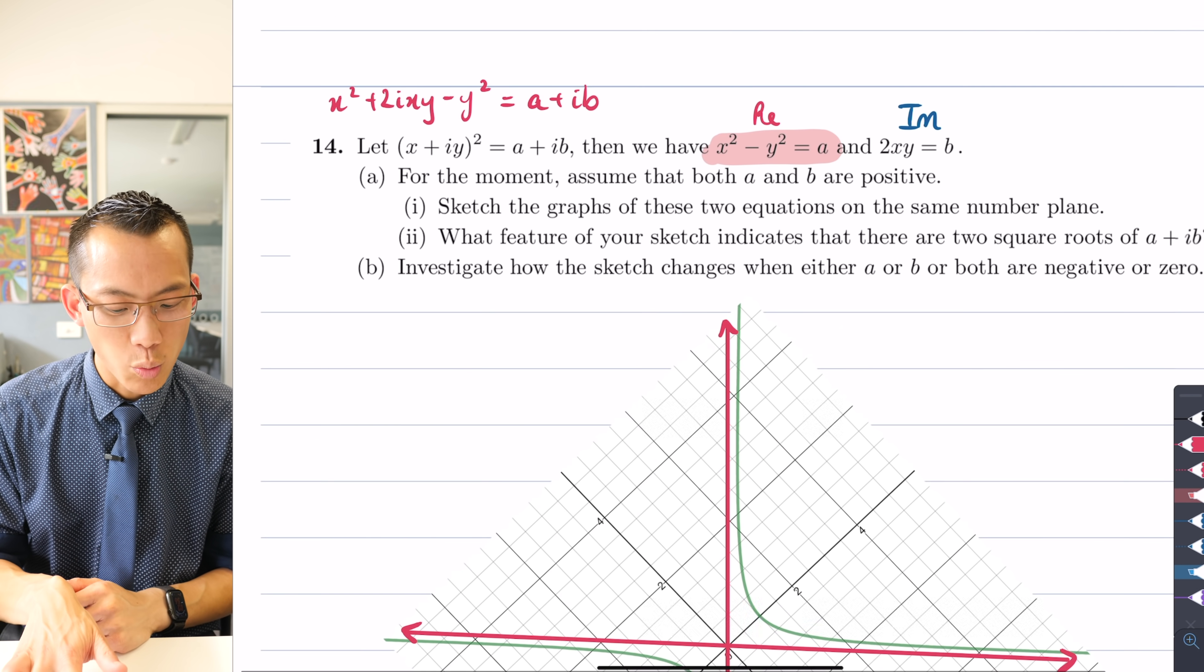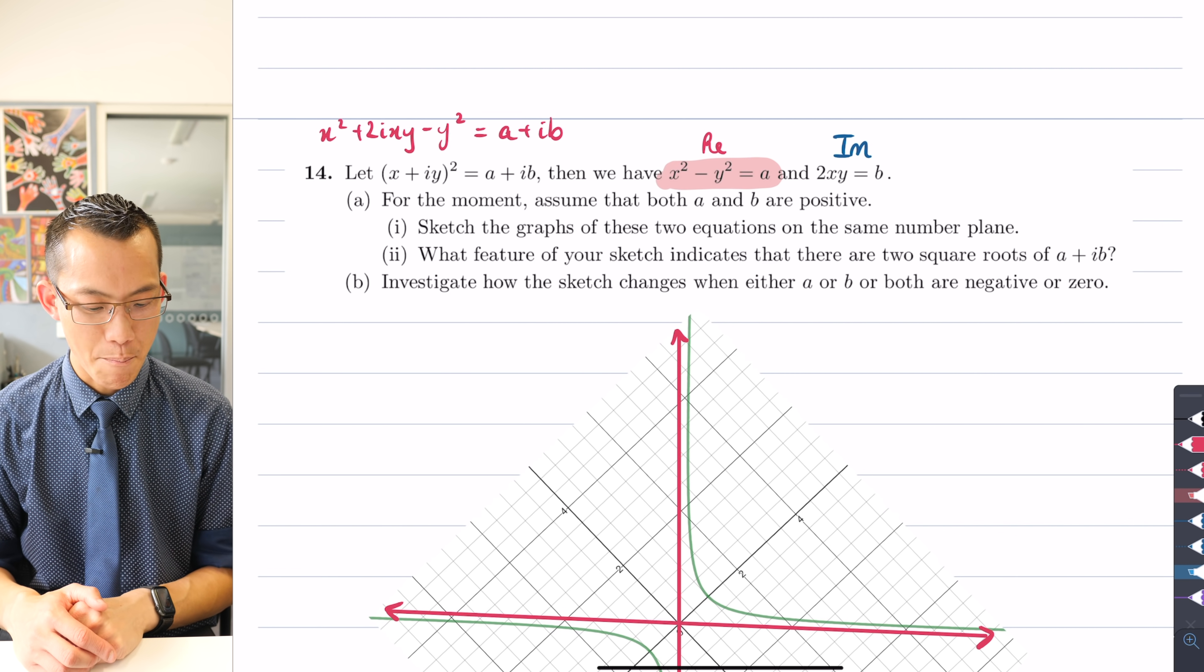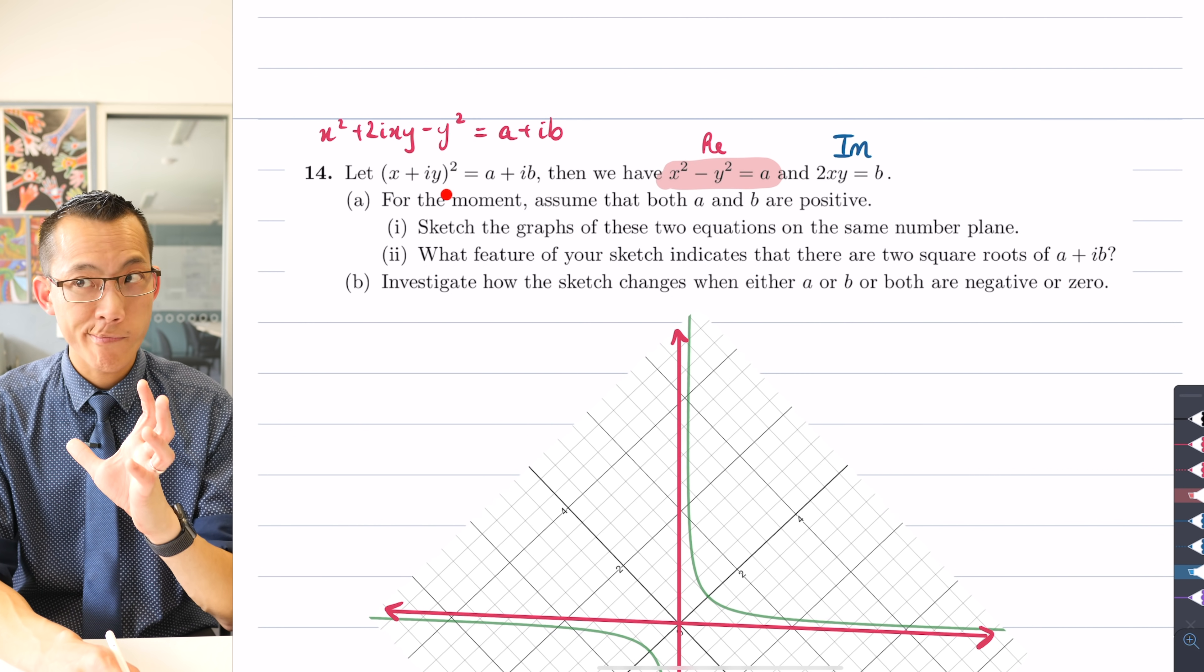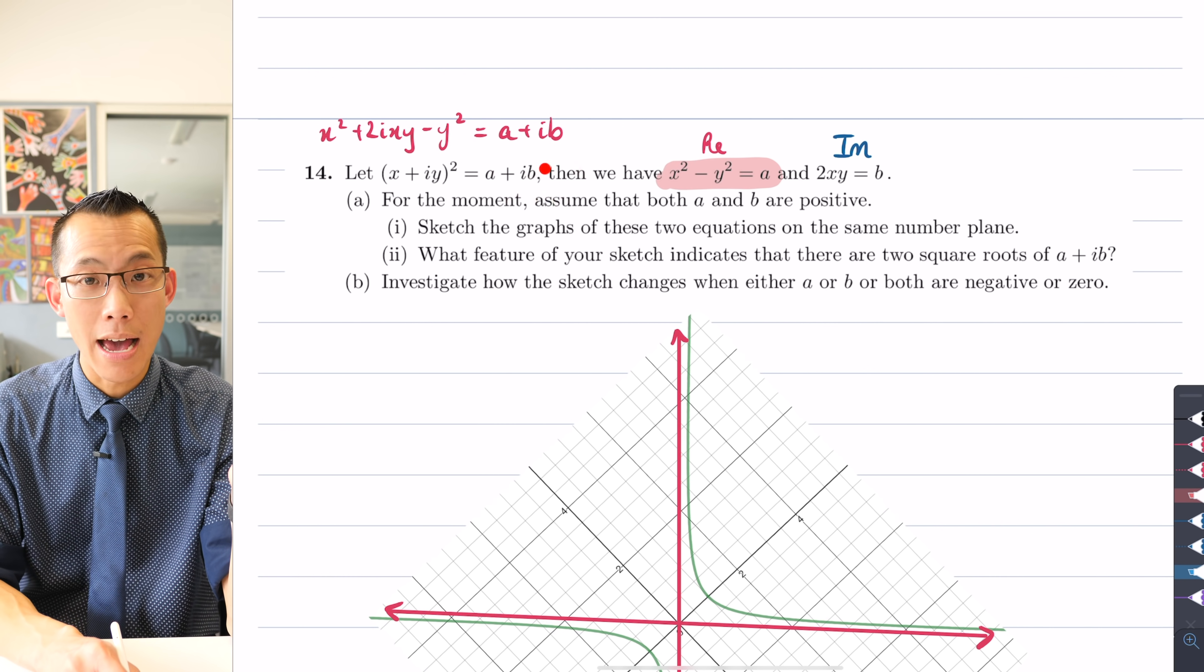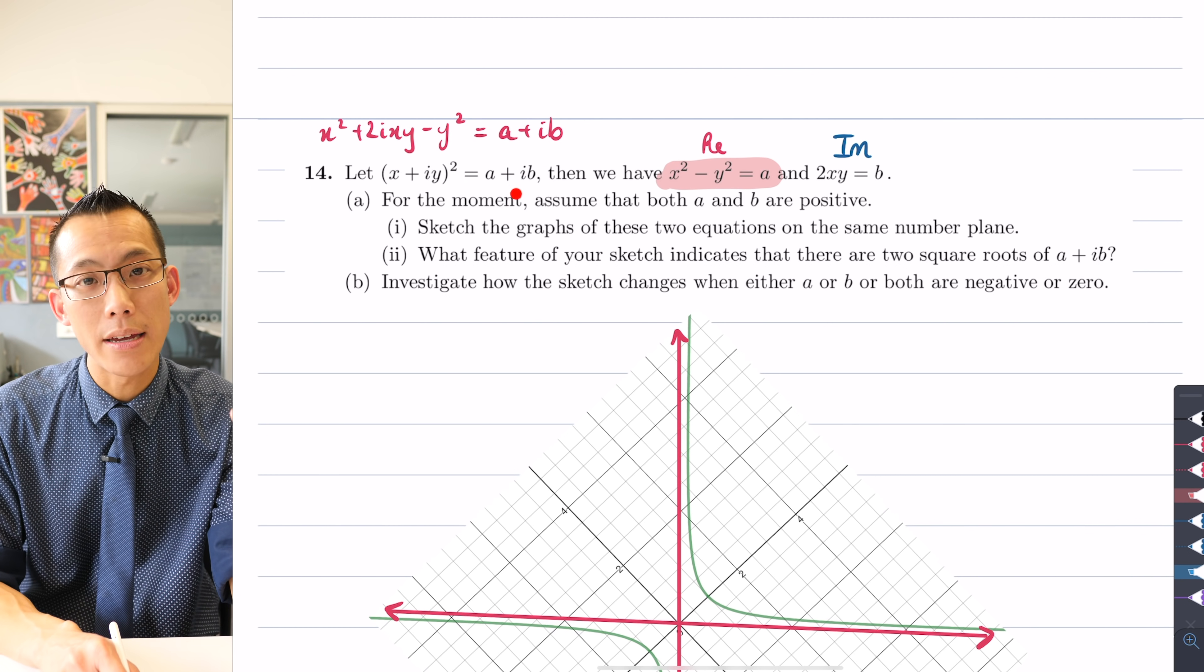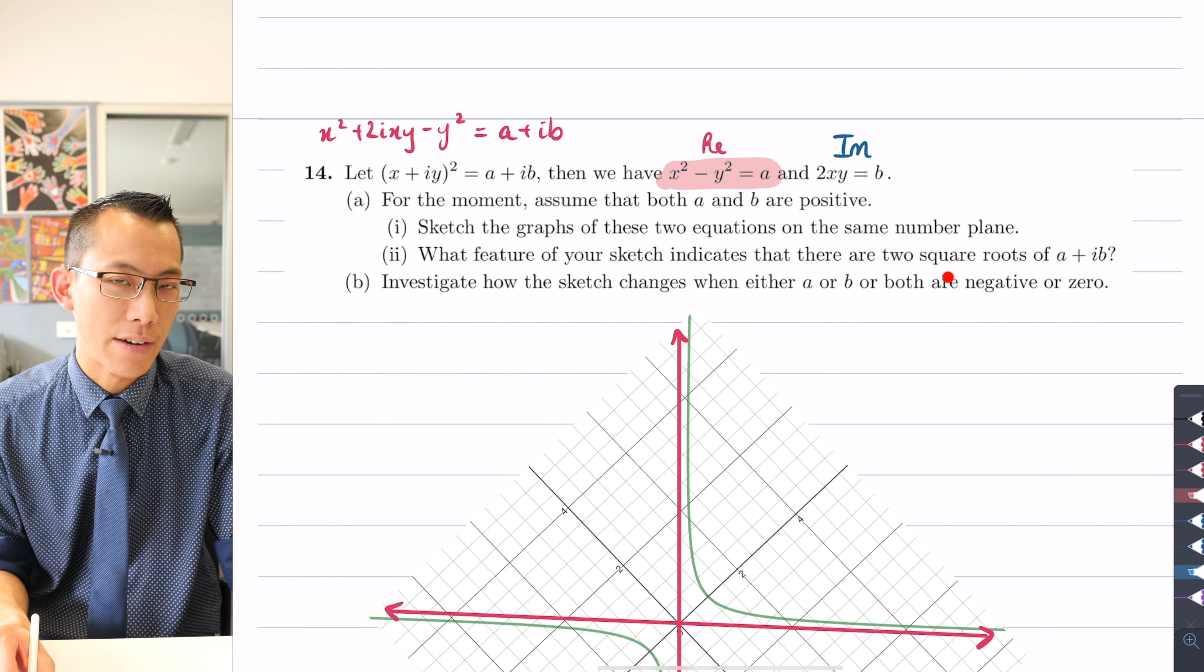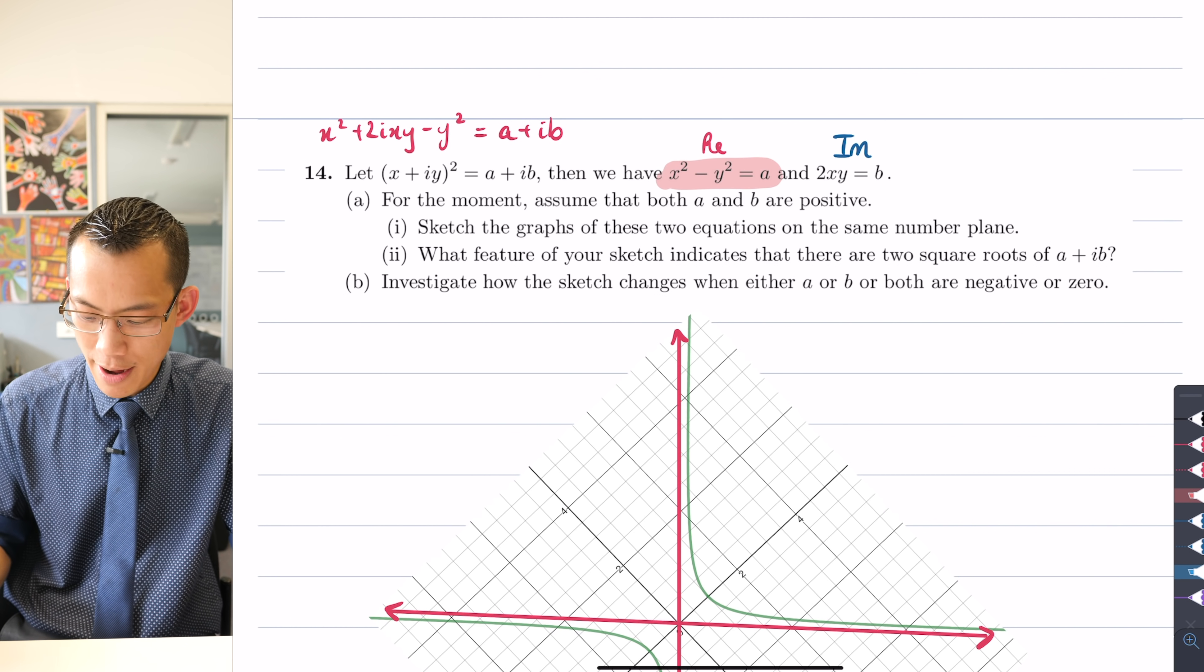The question pushes further on this. It doesn't just say graph these. It says, what feature of your sketch indicates that there are two square roots of a plus ib? We need to pedal back for a moment and think about what's going on here. This equation will tell us that x plus iy, whatever particular x and whatever particular y those are, if you square them they'll give you a plus ib. In other words, x plus iy, whatever values of x and y that satisfy this, those will be the square roots. We've already worked with square roots a little bit before, so we know that every complex number has two square roots.